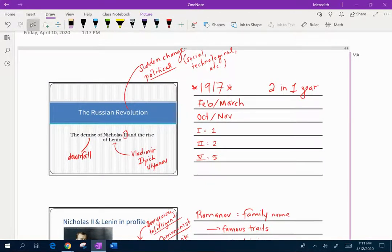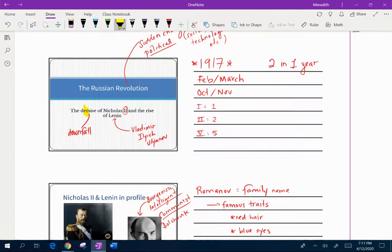So here's the Russian Revolution. I'm going to highlight important things as we go, things that I want to make sure you guys are writing down. I just wanted to go over that revolution is a sudden change, right? In this case, the Russian Revolution is going to be a political revolution. Here you can see I'm calling it the demise of Nicholas II and the rise of Lenin. The word demise means downfall, and Nicholas II is the czar or the leader of Russia at this time.